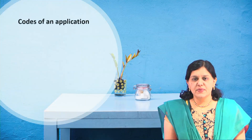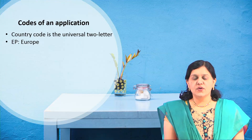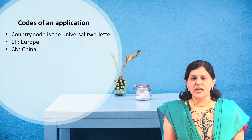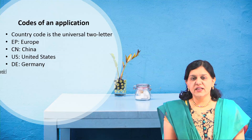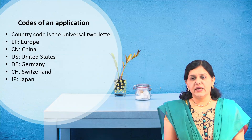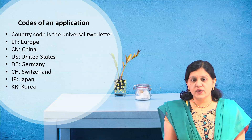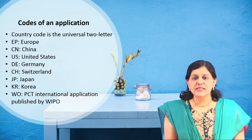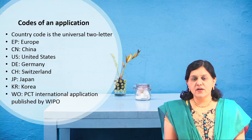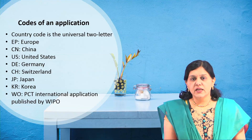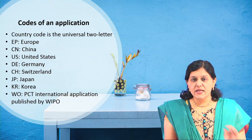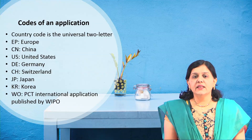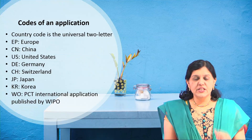Here are a few examples of country codes. EP is for Europe, CN is for China, US is for the United States, DE is for Germany, CH is for Switzerland, JP is for Japan, KR is for Korea, and WO is for PCT International Application published by WIPO — the World Intellectual Property Organization. These two-letter codes tell us which patent office the patent was filed at.